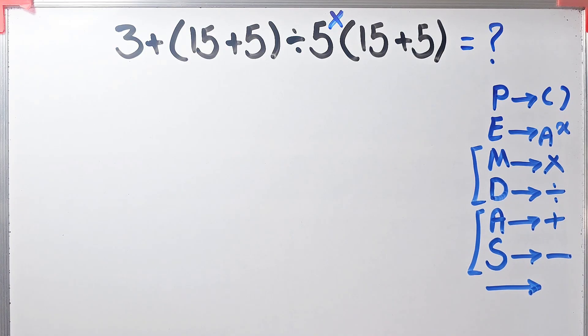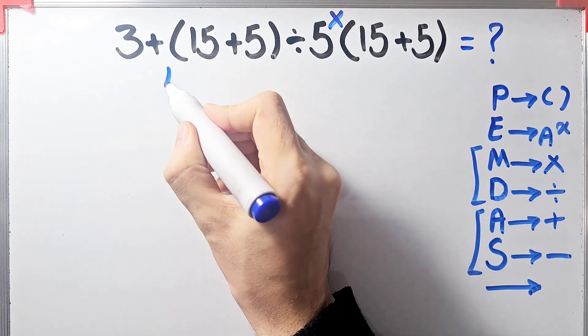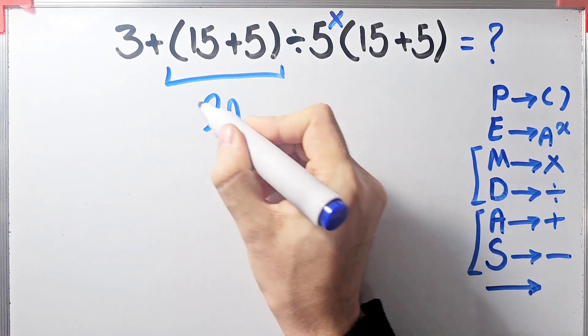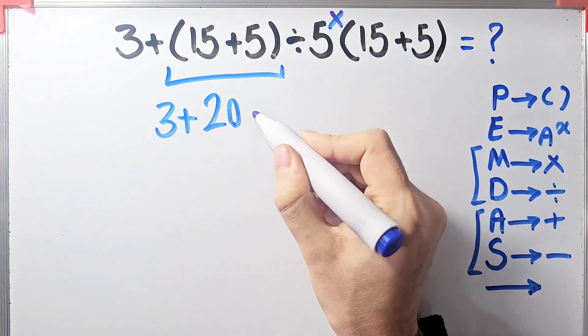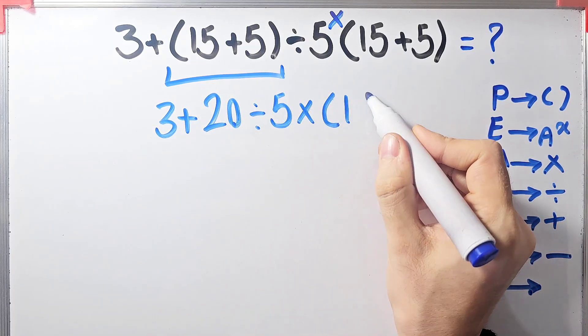When we have both in an expression, we start from the left and simplify the question. According to the PEMDAS rule, first we simplify these parentheses: 15 plus 5 equals 20. 3 plus 20 divided by 5, times open parenthesis 15 plus 5.